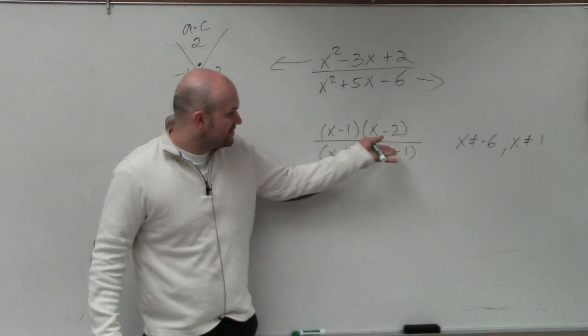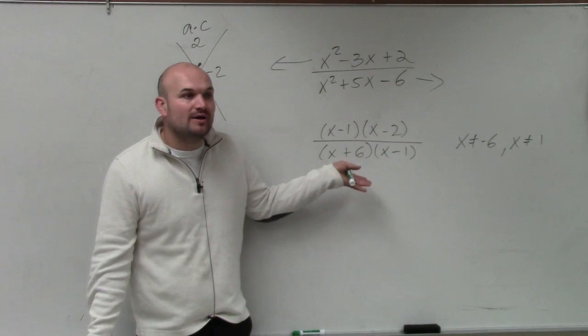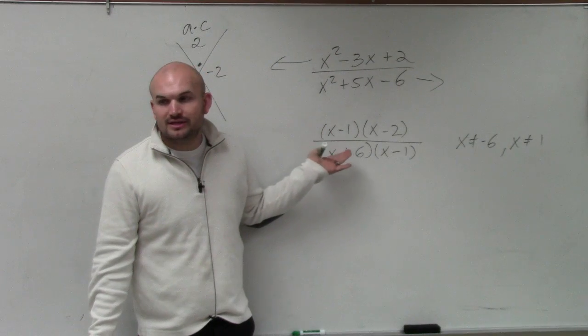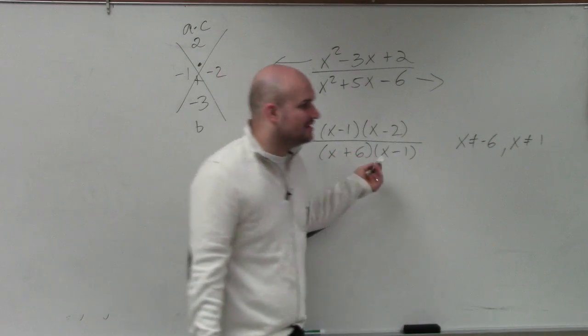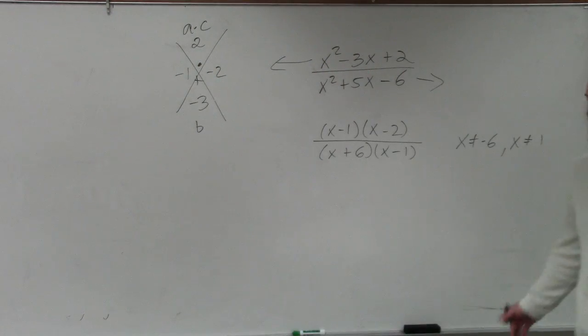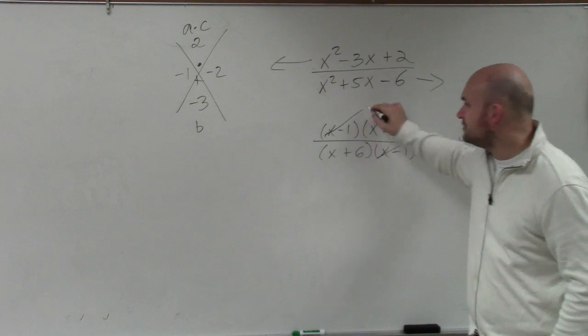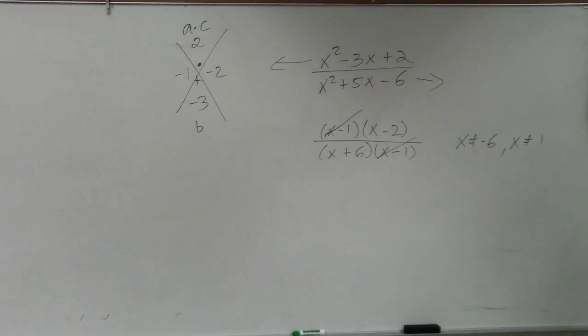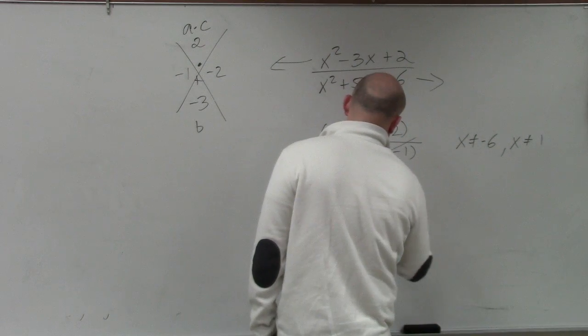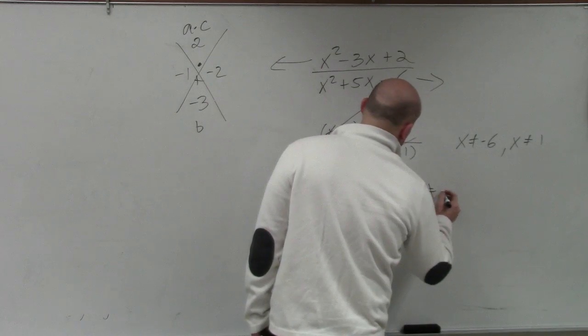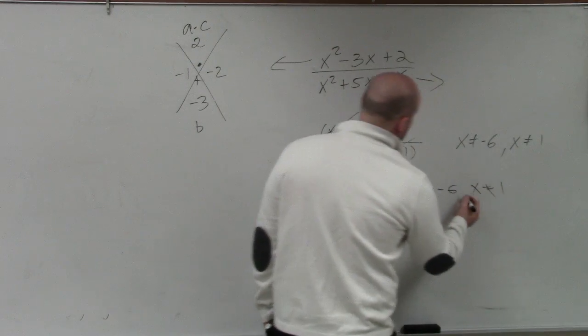So now we have our restrictions, and now we just need to determine what can we simplify? What can divide out? And we look at these, and what can divide out here? The x minus 1. The x minus 1's. Those divide out. They don't need to be right under each other. They divide out. So therefore, our final answer is x minus 2 divided by x plus 6, where x cannot equal negative 6, and x cannot equal positive 1.